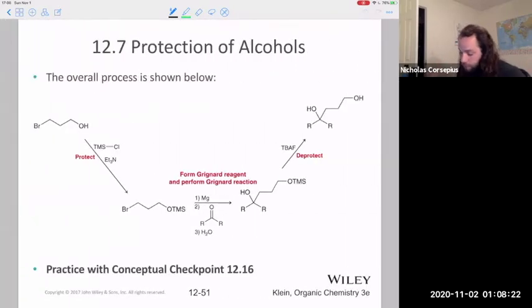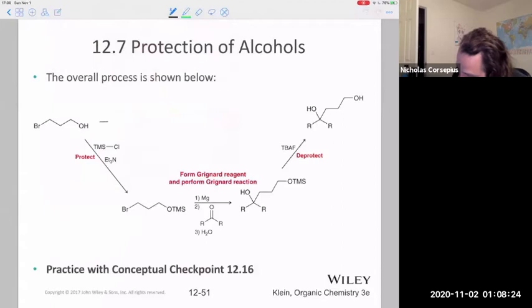All right, so then if I wanted to convert, you know, my goal is to convert this one into this molecule using Grignard. The first thing I'm going to do is add in my TMS chloride, and it's in this triethylamine solvent, this is just our solvent here. Now I have this protected group here.